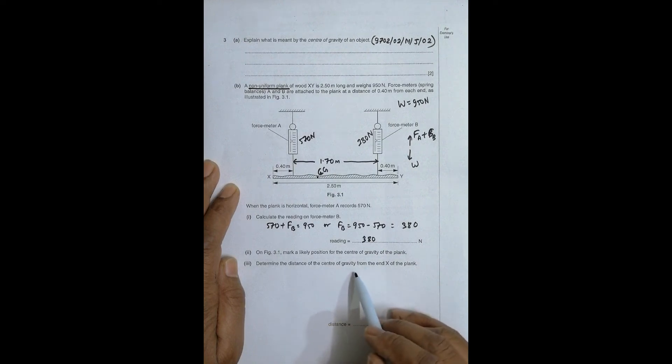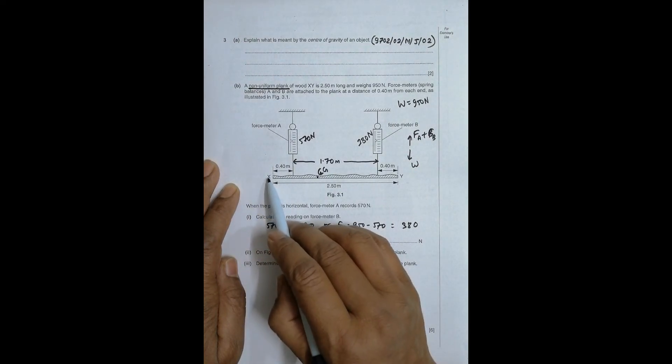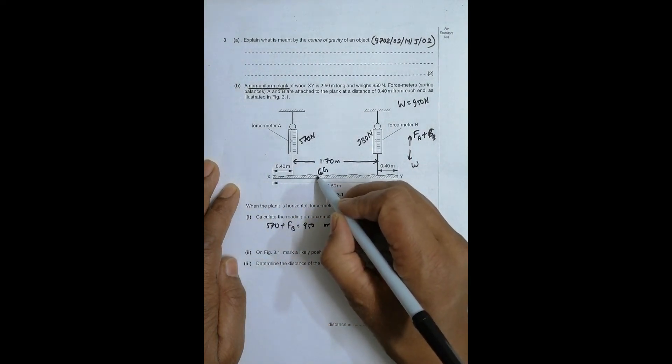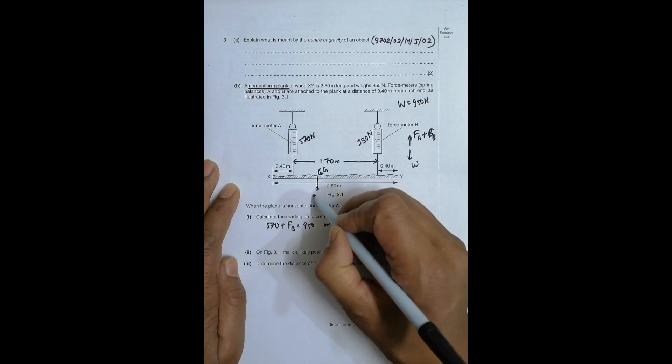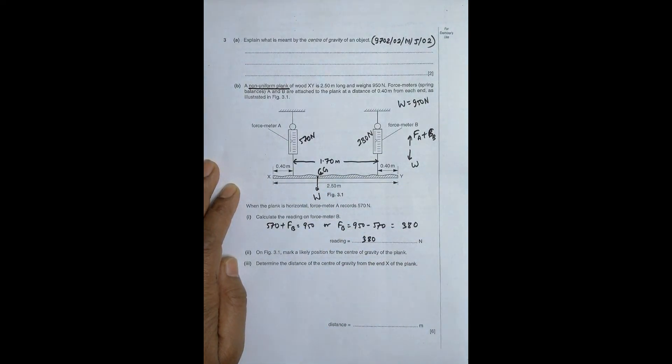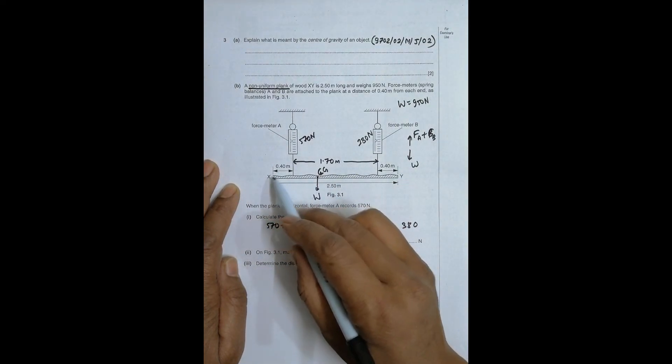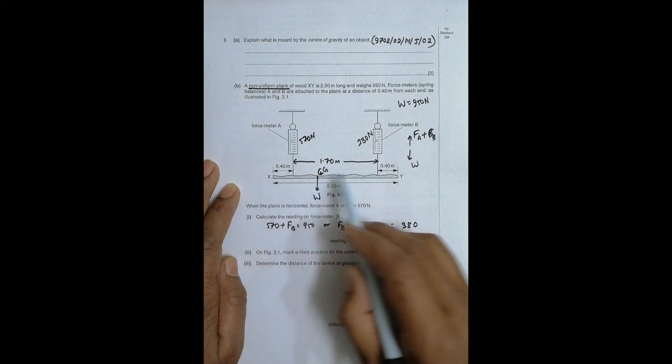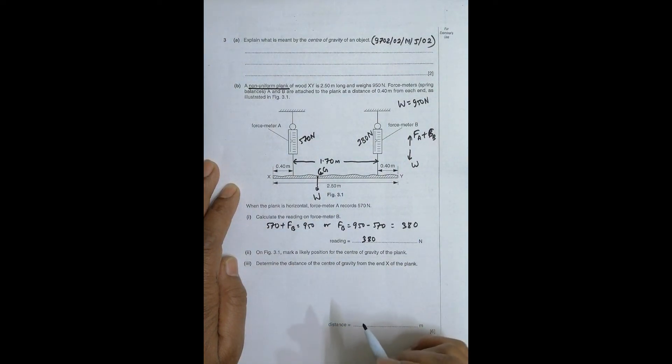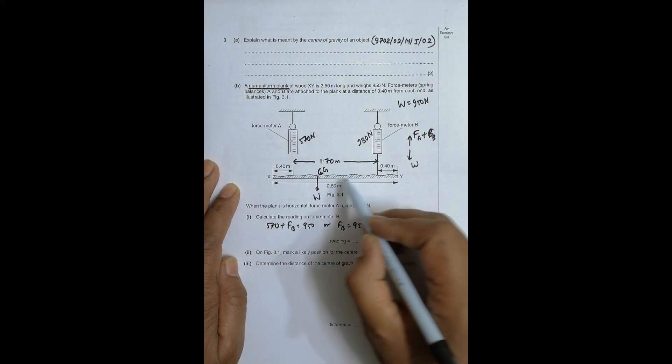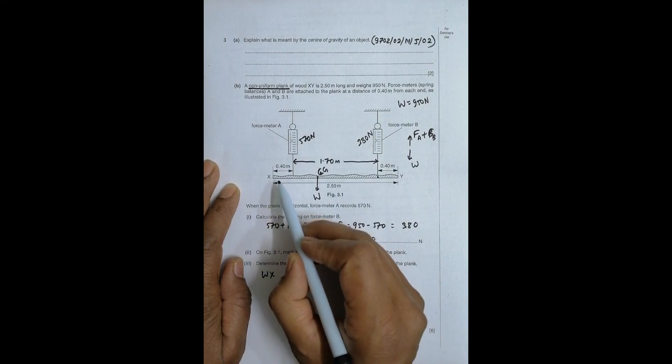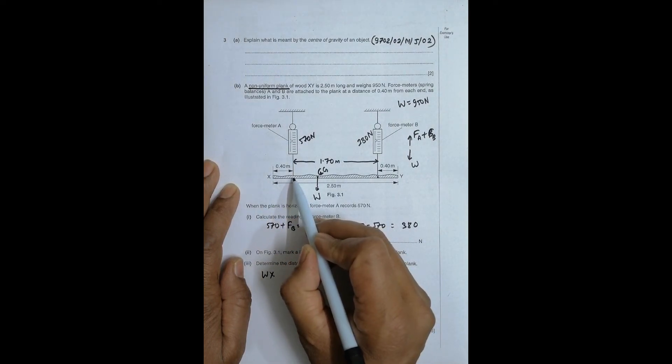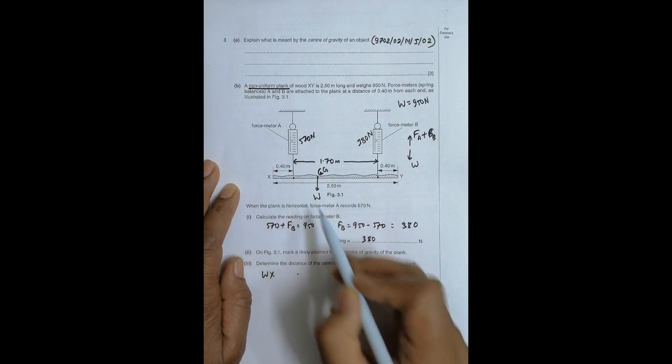Determine the distance of the center of gravity from the end of the plank. So I have to find this thing. From the CG, the weight will act like this. So I have to find the distance of this CG from this point X. Let us remember that the whole body here is in equilibrium. So that means I can take any of the point as the fixed point. This as the fixed point.